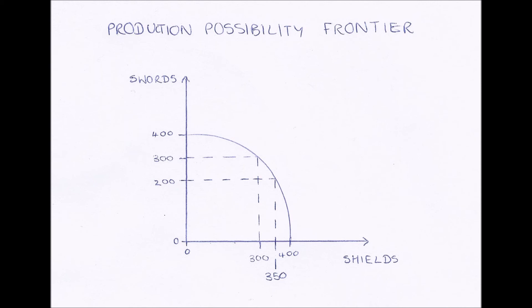And this is what a PPF shows. Because a PPF is working at full efficiency, we have to split our total resources between two different goods. For example, when I'm producing 200 swords, I read across and down and I'm producing 350 shields. But if I need to increase swords from 200 to 300, I read across and down and I have to cut my shields by 50, down to 300 shields. This is because I have to take blacksmiths, metal workers, and buildings away from the shield producers and give them to the sword producers. So in order to make an extra 100 swords, I have to stop producing 50 shields — and that is the idea of opportunity cost.